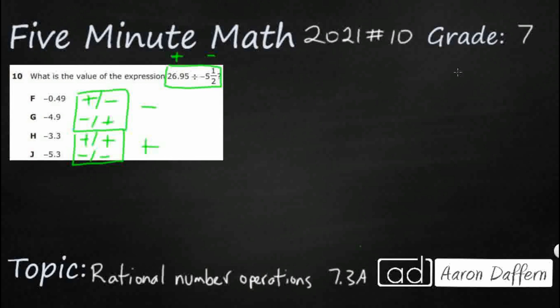So how do we divide these? One is a decimal, one is a fraction. Let's turn both into decimals or both into fractions. Probably the easiest way to do it would be to turn both into decimals. So we've got our 26.95, that is our dividend. We're dividing into that. That is already a decimal, so we just need to change this negative 5.5.